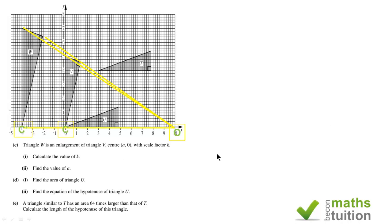For parts C, D, and E, in part C, we are supposed to calculate K, the scale factor, and A, the coordinate of the center of enlargement, O.